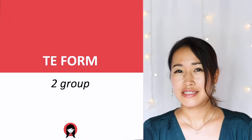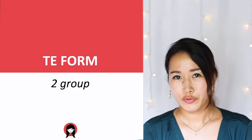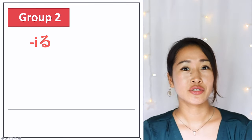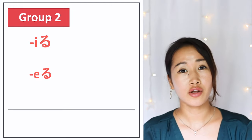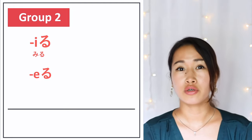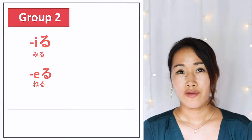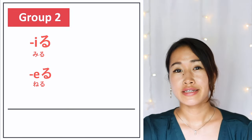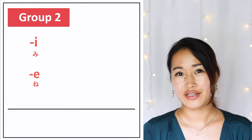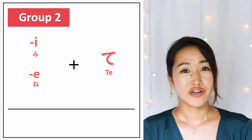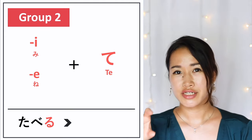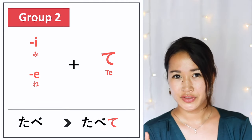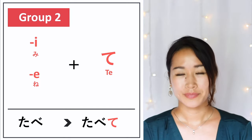So there are three groups of verbs in Japanese. Let's start with group 2. Group 2 always ends with RU with I or E ending syllables before — like 'miru' (to watch) or 'neru' (to sleep). Whenever we conjugate group 2 verbs, this RU disappears and you add TE. For example, 'taberu' (to eat) — you take out RU and put TE, so it would be 'tabete'.